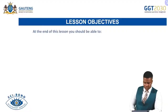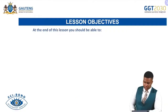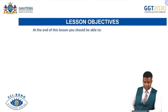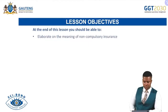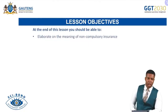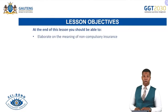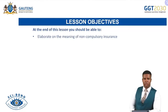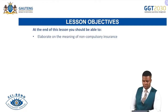Lesson objectives — this is what you should understand at the end of this lesson, and you should be able to do the following during the exam. You should be able to elaborate on the meaning of non-compulsory insurance, because insurance has compulsory and non-compulsory types. The compulsory one applies to businesses, and the non-compulsory one also applies to businesses.